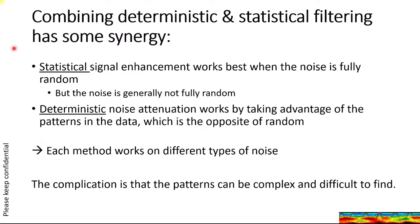Combining these two methods — deterministic and statistical — actually has some synergy. Statistical signal enhancement works best when the noise is fully random. The problem is the noise is generally not fully random. Deterministic noise attenuation works best by taking advantage of the patterns in the data, and patterns are the opposite of random. So each method works on different types of noise and are complementary. You should optimize your acquisition for both types.